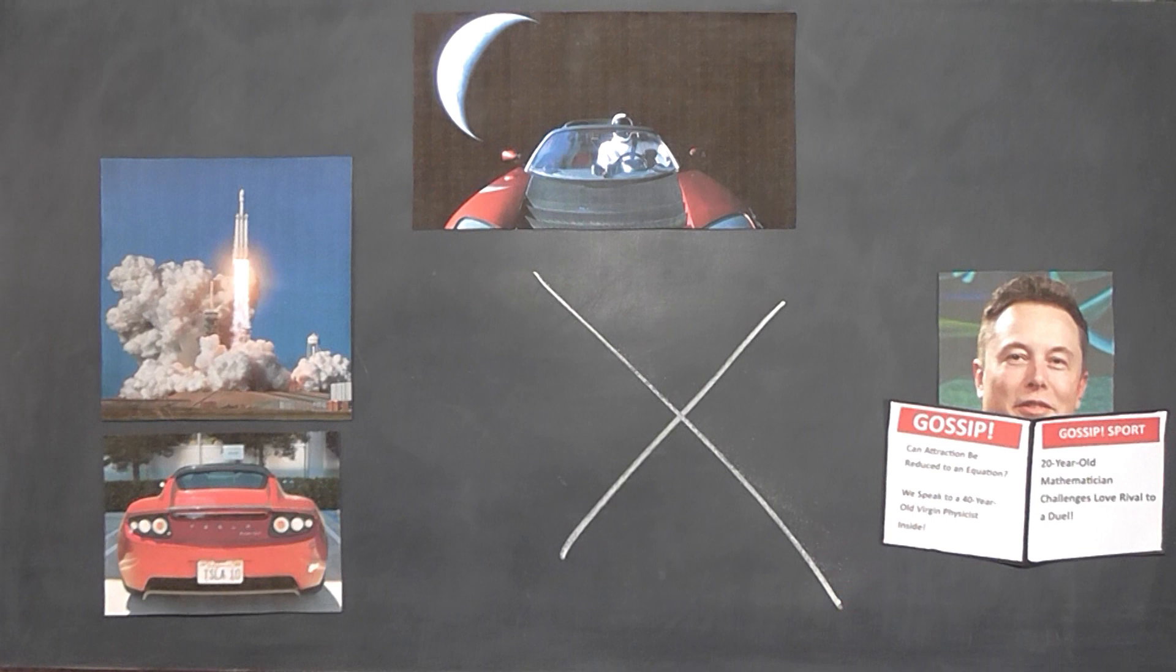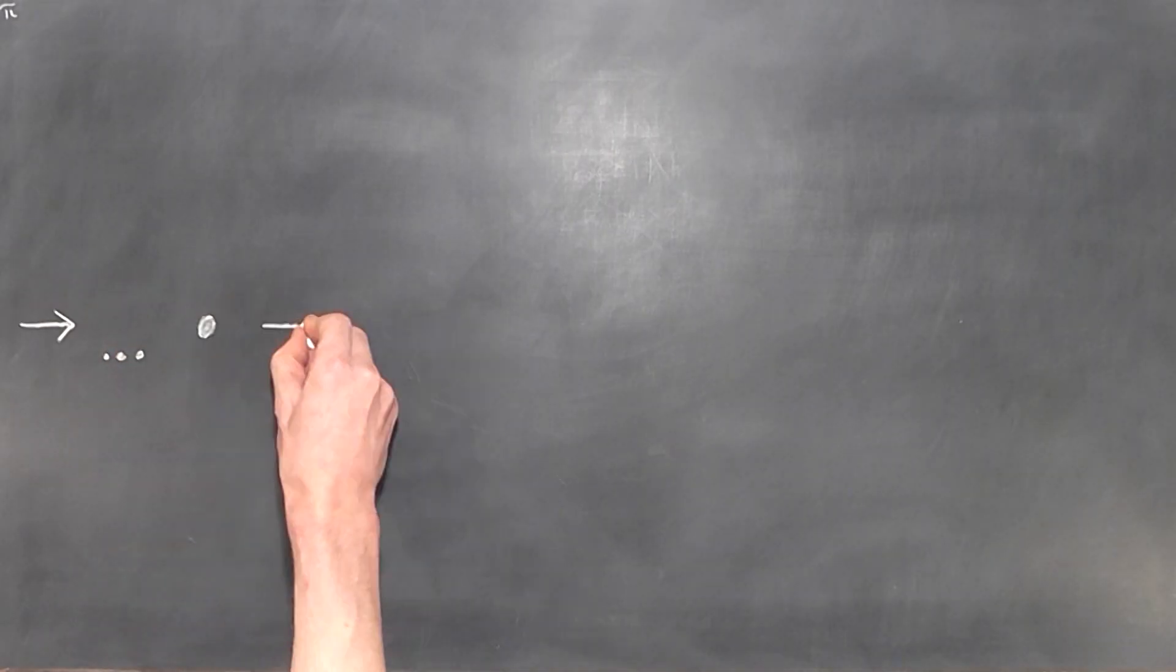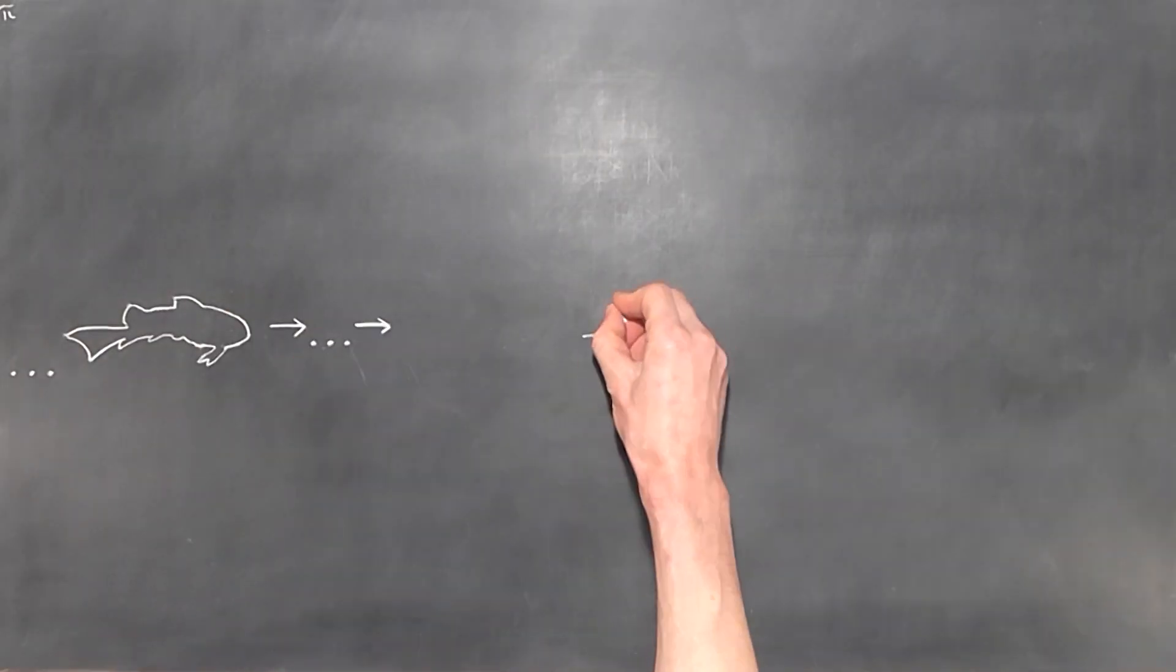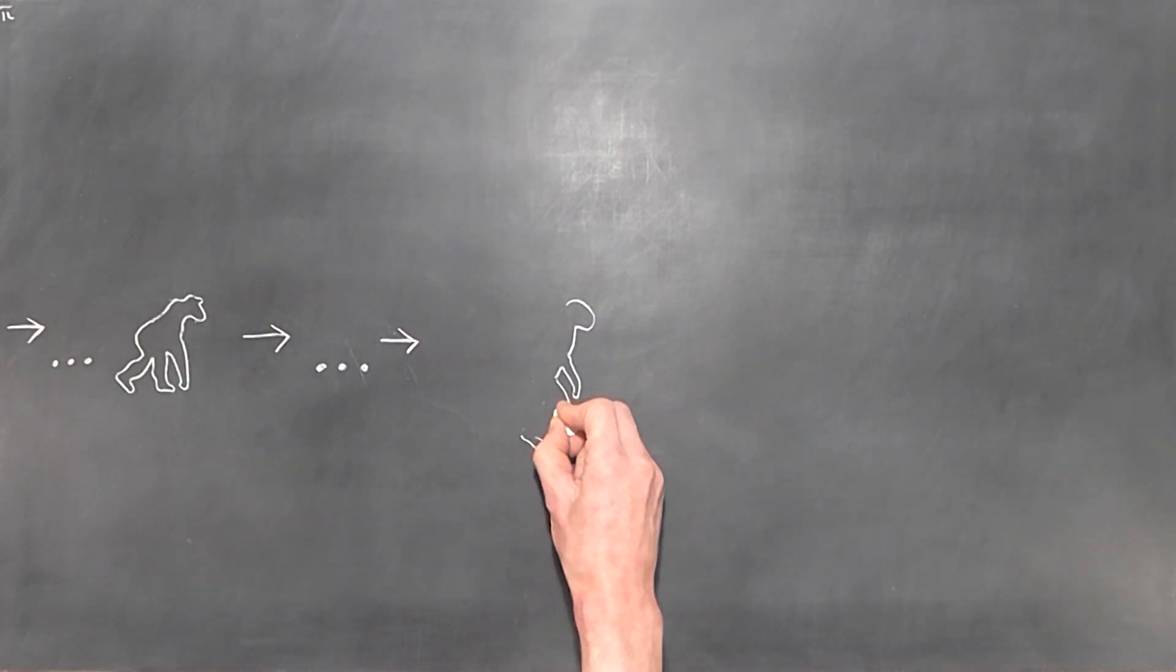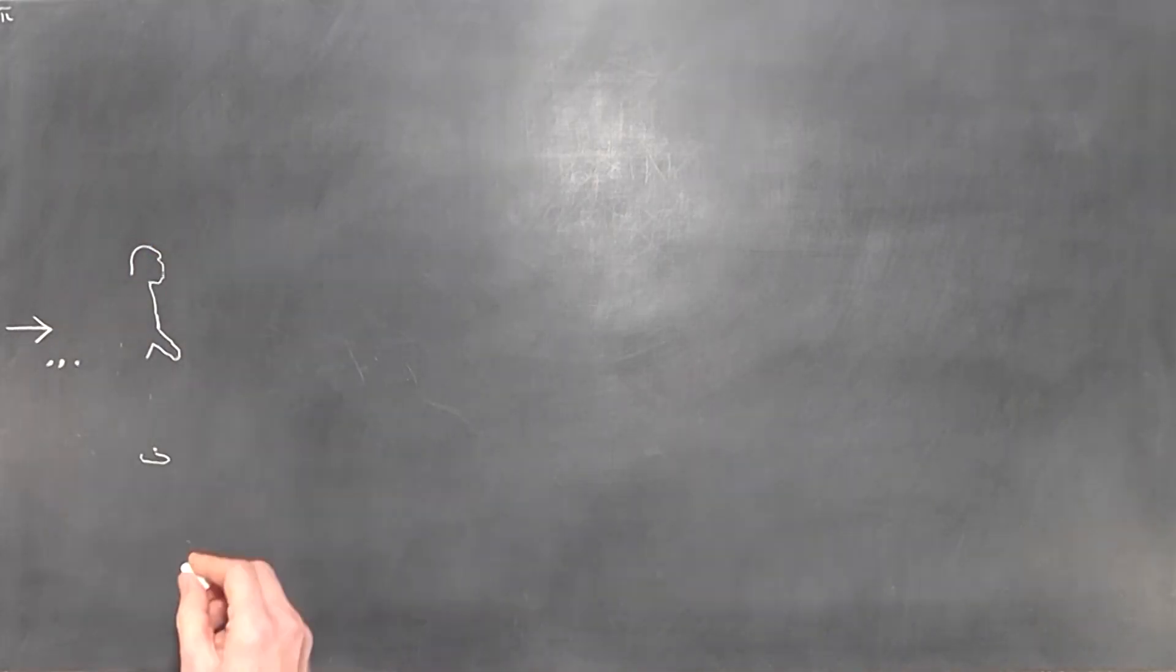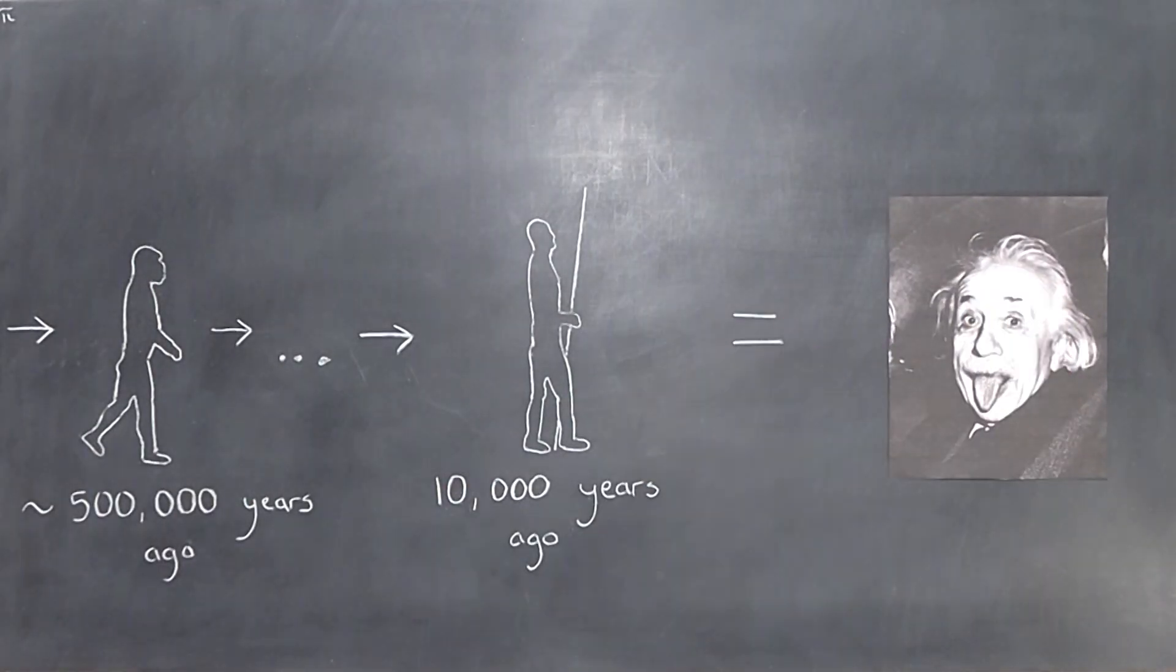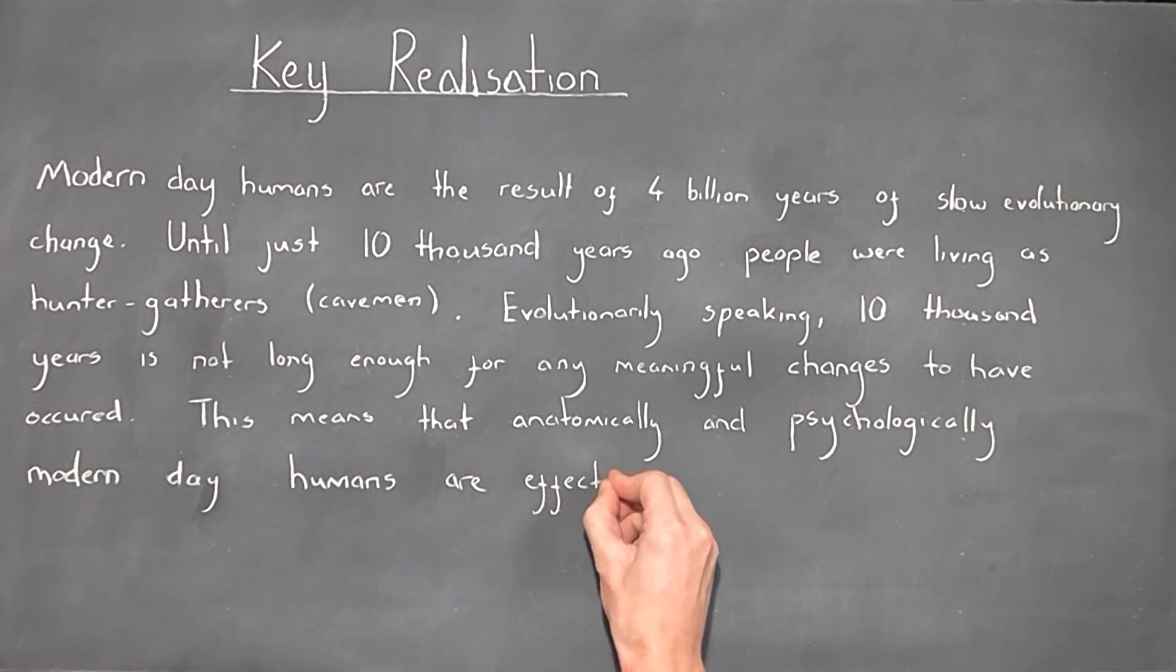For one thing, we can look to the work of psychologists like Daniel Kahneman, whose research shows beyond all doubts that we still think like cavemen. However, to really understand this phenomenon, the key realization is that modern-day humans are the result of 4 billion years of slow evolutionary change. Until just 10,000 years ago, people were living as hunter-gatherers, or, well, cavemen. Evolutionarily speaking, 10,000 years is simply not long enough for any meaningful changes to have occurred. This means that anatomically and psychologically, modern humans are effectively cavemen.